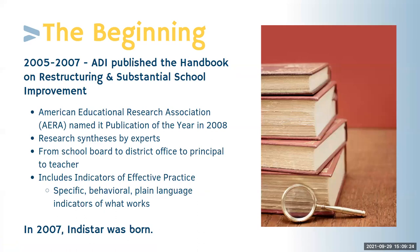Before I get straight into Derago Star, I want to talk about where Indistar came from. Indistar is our main name, and when states adopted the platform, we wanted it to be more theirs — each state gets to decide which indicators and expectations apply, and gets to name it. It's called Derago Star in Maine. The Academic Development Institute was part of a national center — the main partner in a national center on innovation and improvement from 2005 until 2012.